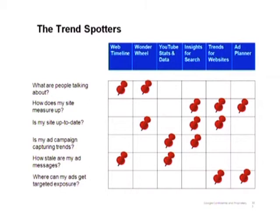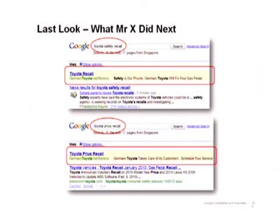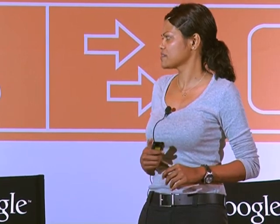So we have six free tools, and we go back to the questions we asked at the very beginning. Using these tools, we address them. Mr. X comes out the champ in the auto industry because now he knows the trends — how to do research into his site and related sites, how to improve his content, change his ad messaging, find placements, and find potential partners. I want to show you a real example: I typed in 'Toyota Safety Recall' and 'Toyota Prius Recall' and found two sponsored ads. The first reads 'Toyota Recall — safety is our priority. Jermaine Toyota will fix your gas pedal.' The second: 'Toyota Prius Recall — Jermaine Toyota takes care of its customers. Schedule your service.' This guy doesn't sell cars — he sells the service — but he's using the opportunity to drive traffic to his site. Do try out the six tools, and once you've done that, use Analytics to track your success.